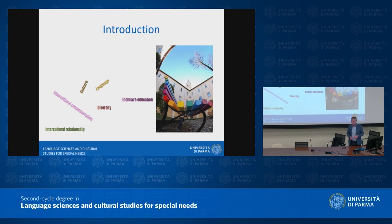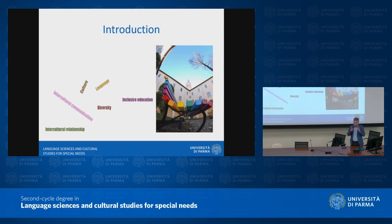Not only as a final aim, but as a way to deal with daily life of the course, we need to build on intercultural relationships. These key words illustrate the way our course works. And then there is inclusive education. The course is called Language Sciences and Cultural Studies for Special Needs, so the idea is to direct our focus towards making communication available and accessible to everybody in an inclusive way.